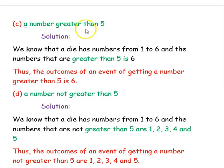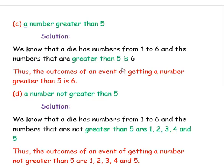Next question is outcomes of a number greater than 5. A die has numbers from 1 to 6, and the number which is greater than 5 is 6. So it has only one number which is greater than 5. Thus the outcome of an event of getting a number greater than 5 is 6, and only one outcome is possible.